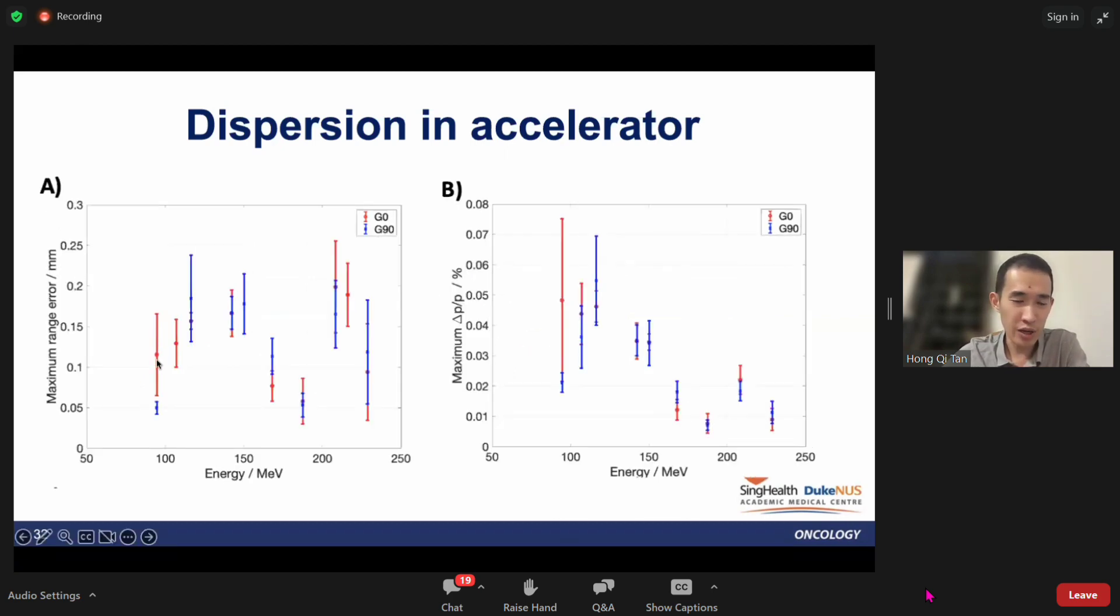If we look at the maximum range error in these measurements, most of the range errors are less than 0.3 mm. From TG-224, which is the QA report for proton therapy, the tolerance limit for range errors is 1 mm in daily and monthly QA, so we are well within this tolerance limit. The maximum delta P over P that we registered is less than 0.08%, and Hitachi promised us less than 0.2%, so we're well within the Hitachi limit as well.